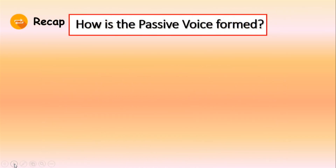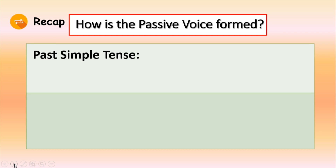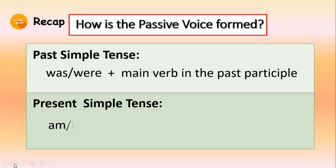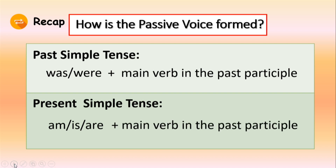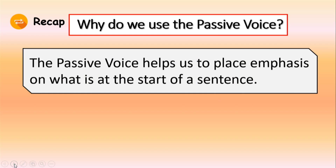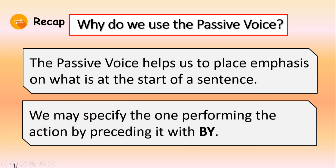So remember: to form the passive voice in the past simple tense, use was or were and the past participle of the main verb. In the passive voice present simple tense, use am, is, or are and the past participle of the main verb. We have also learnt that we use the passive voice as it helps us to place emphasis on what is at the start of a sentence. In the passive voice, we may specify the one performing the action by preceding it with by.